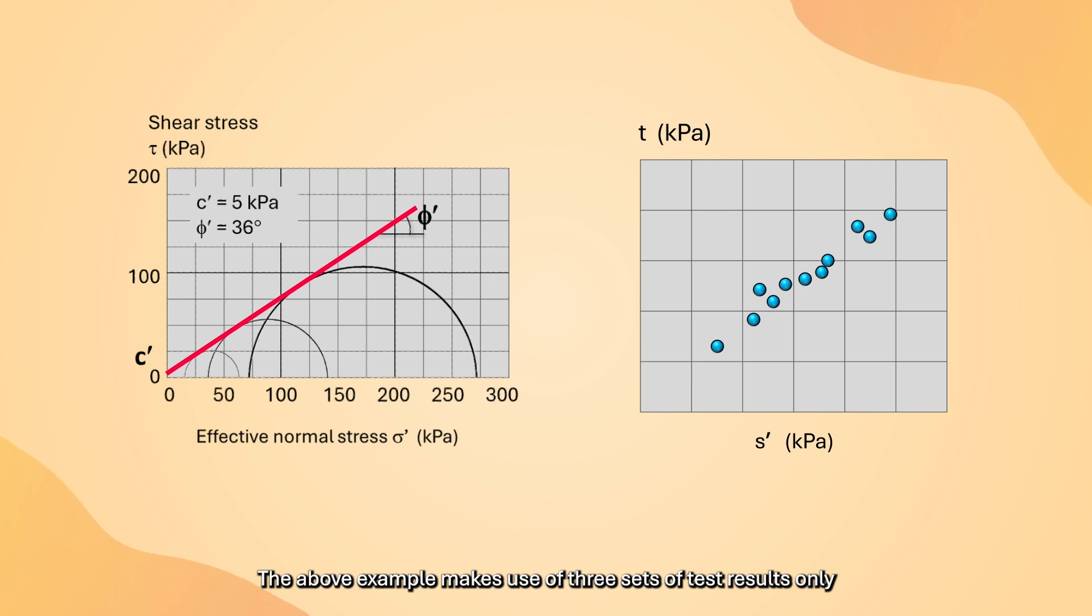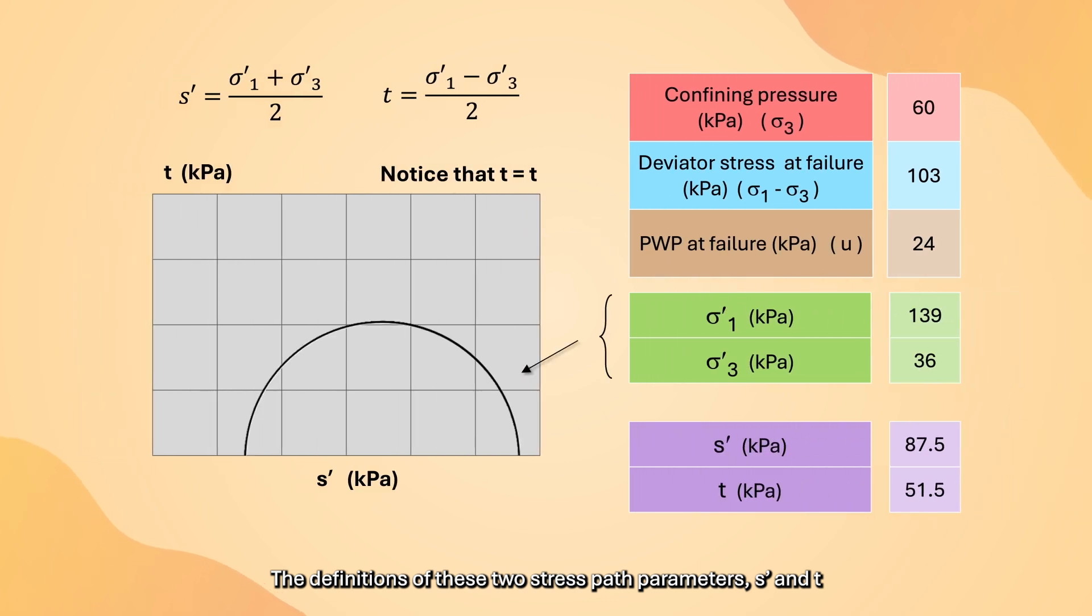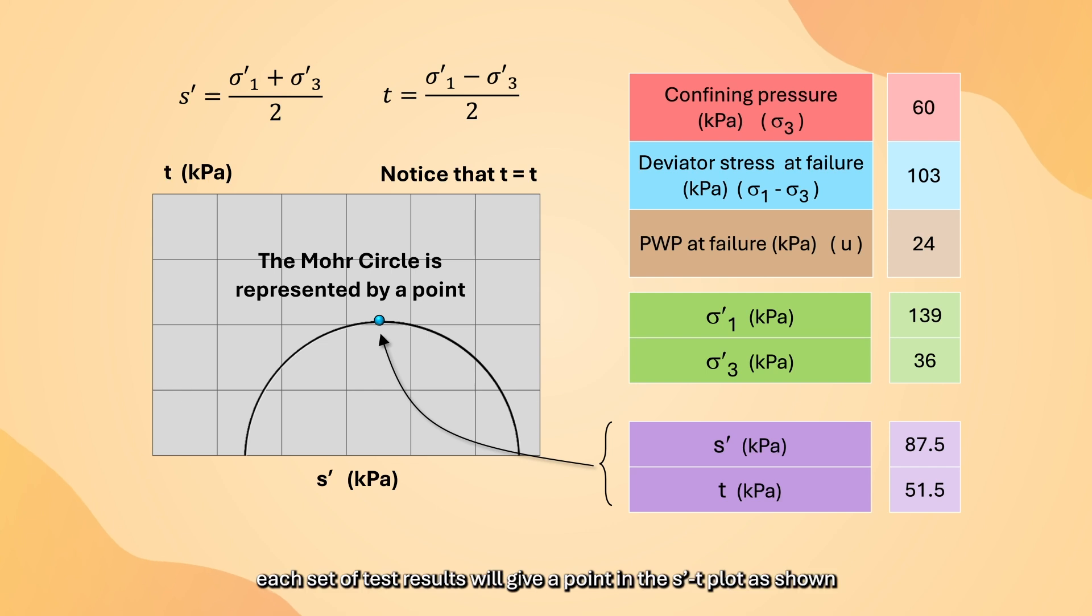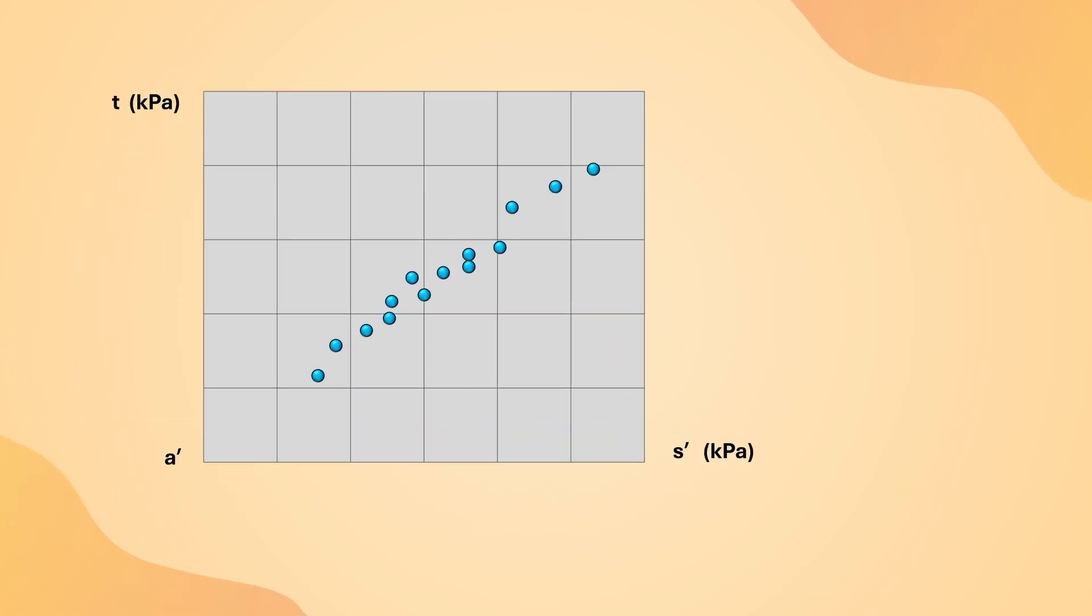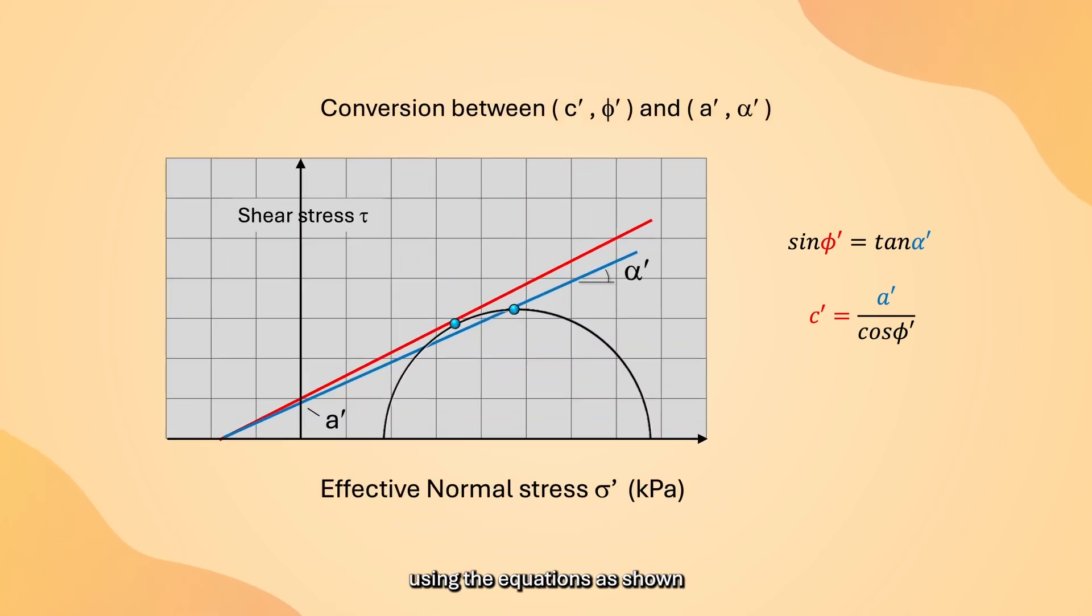The above example makes use of three sets of test results only. In practice, it is recommended to obtain more test results in the determination of C' and φ' through an ST plot. The definitions of these two stress path parameters, S' and T, are given here in terms of σ1' and σ3'. In this approach, each set of test results will give a point in the ST plot as shown. The plot here shows 14 test results from which a regression line based on the principle of least squares is drawn. The slope angle and intercept obtained from this plot can then be converted into C' and φ' values using the equations as shown. The conversion equations are obtained using simple geometrical consideration.